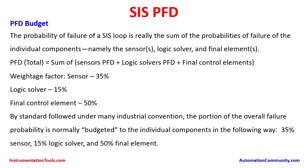PFD budget — now we will discuss the PFD budget and how it has to be taken into account. The probability of failure for a SIF loop is really the sum of the probabilities of failure of the individual components, namely the sensors, logic solver, and final elements. So the PFD total equals the sum of sensor PFD, plus logic solver PFD, plus final control elements PFD.